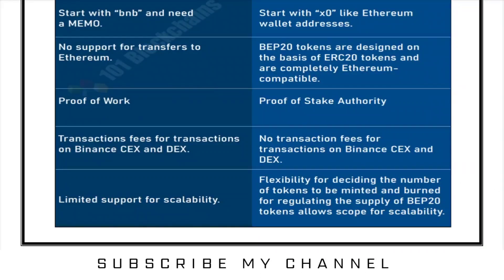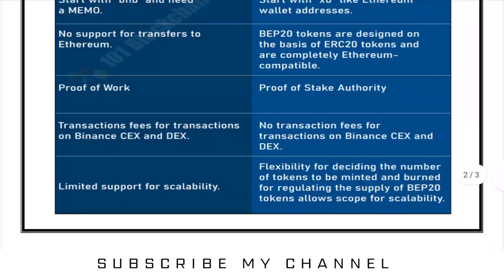BEP2 uses a proof-of-work consensus, while BEP20 uses proof-of-stake authority. BEP2 requires a transaction fee for transactions on Binance CEX and DEX, while BEP20 has no transaction fee for transactions on Binance CEX and DEX. BEP2 has limited support for accessibility, while BEP20 is flexible in deciding the number of tokens to mint and burn for regulating supply, allowing greater scalability.